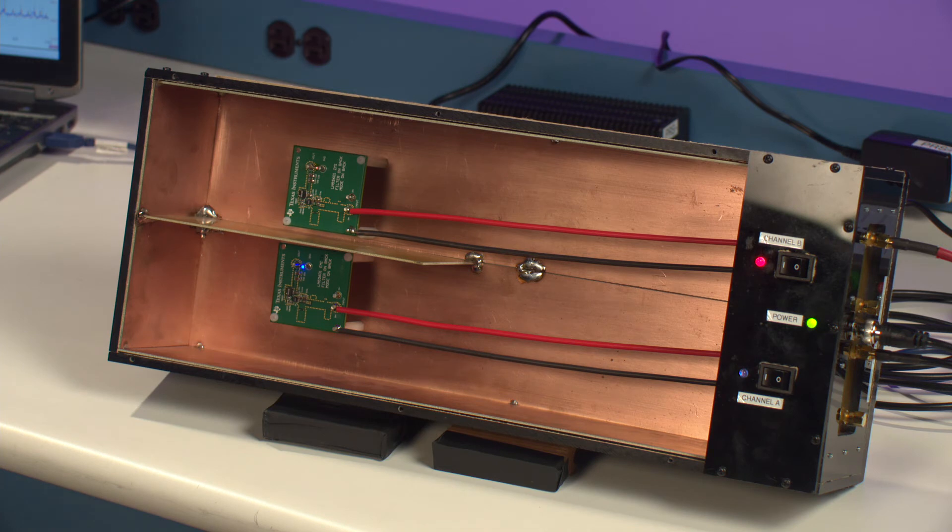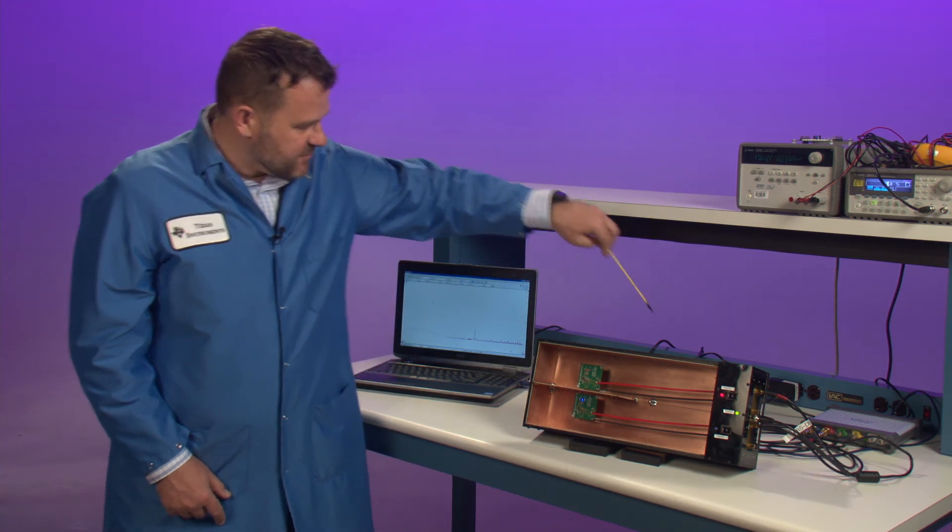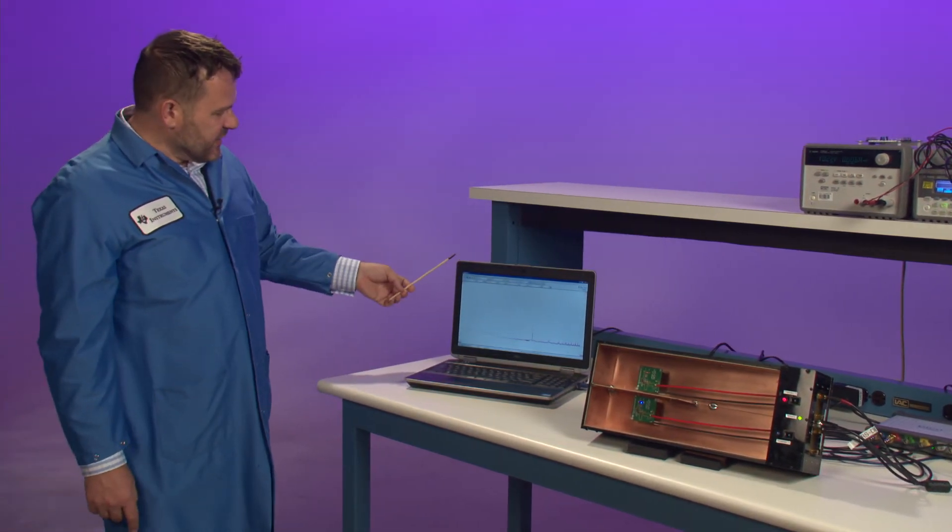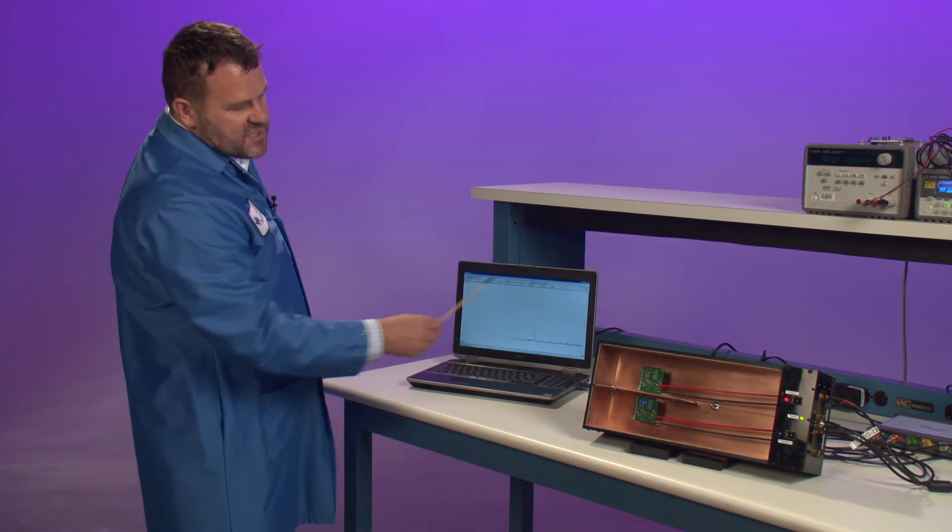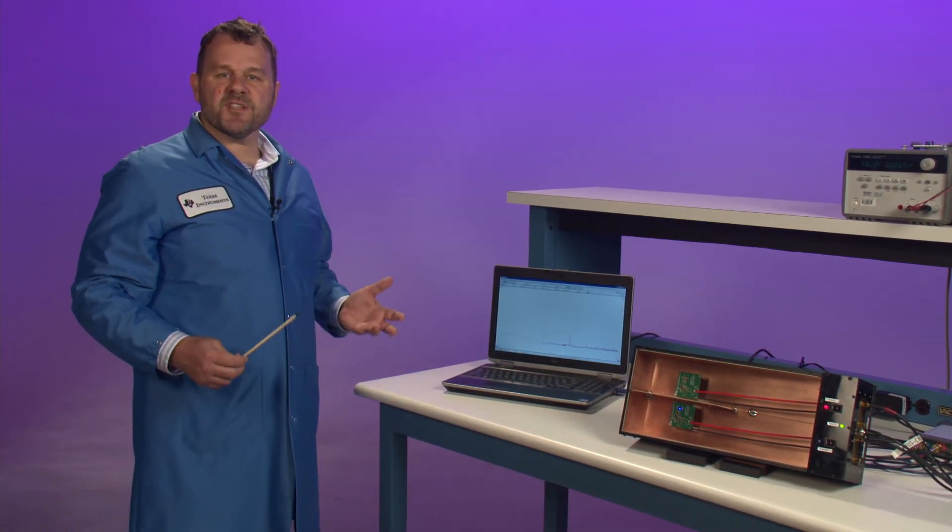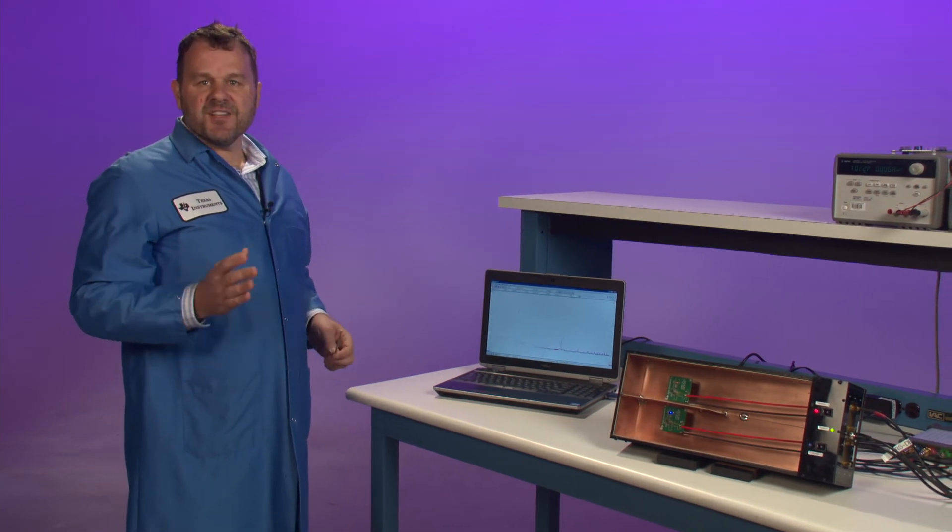This box has on either side of the channel a LISN, which then goes to a PicoScope analyzer and then reads out on this laptop over here. This box has been set up specifically designed for CISPR 25 class 5 applications to test EMI.